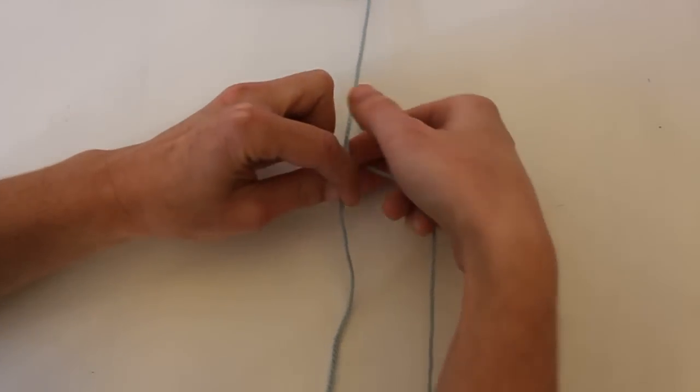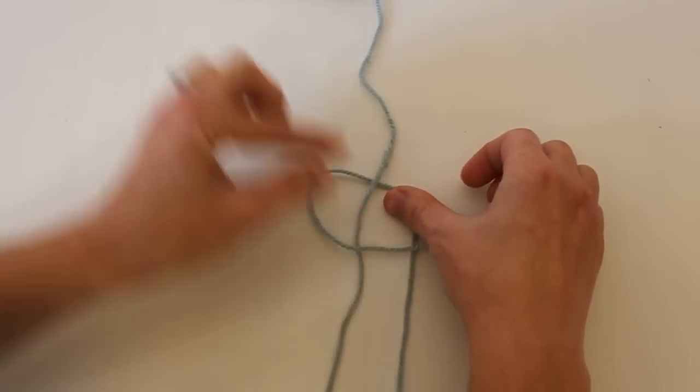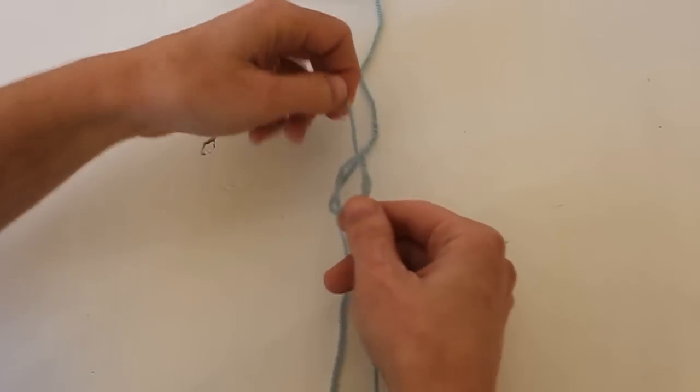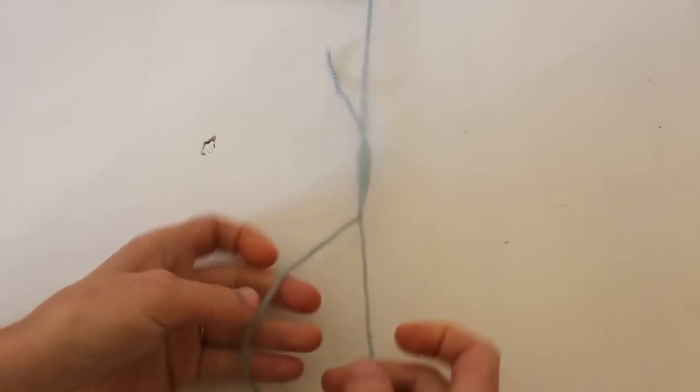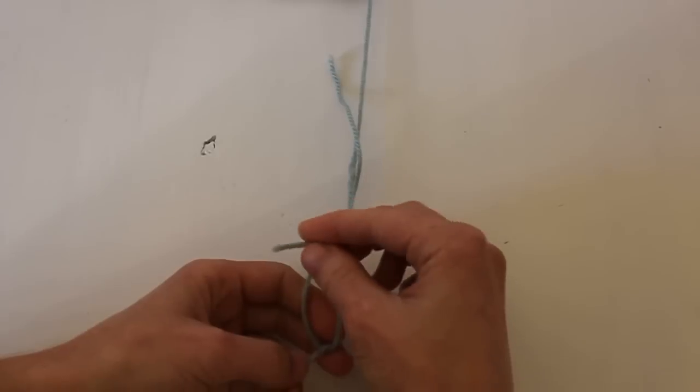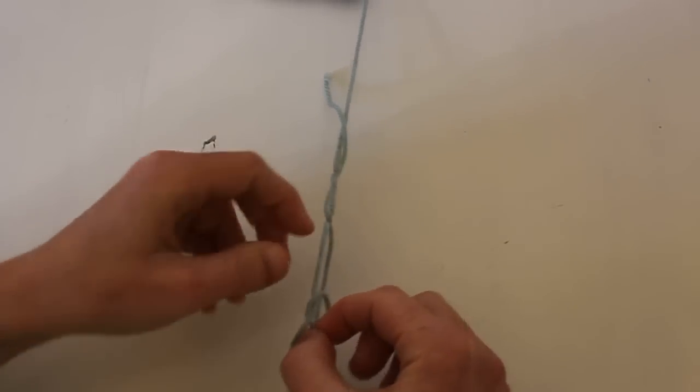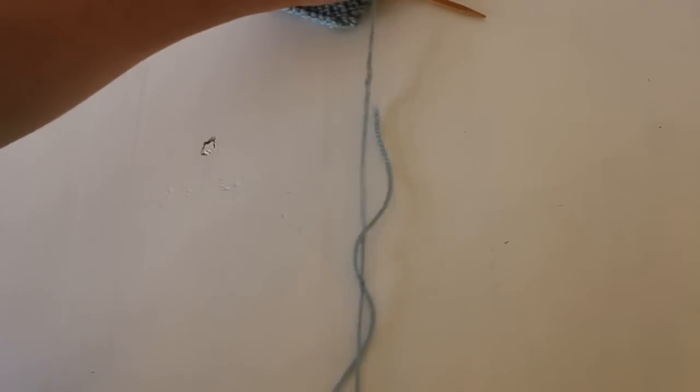So we're just going to go under, and over, and through. And again with the working yarn, we'll go under, and over, and through. So pull tight. Pull your two knots together.